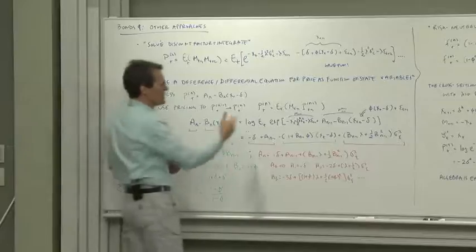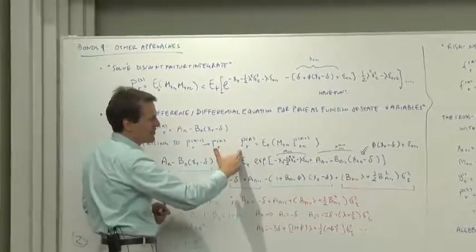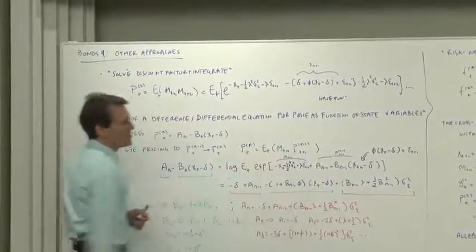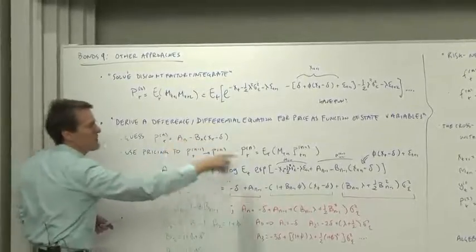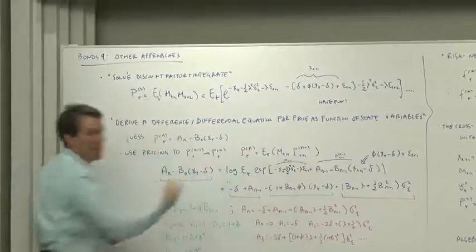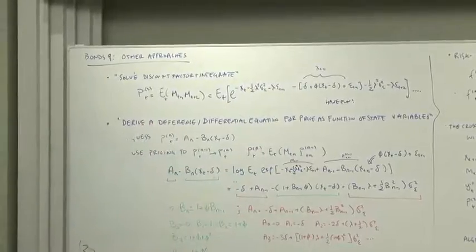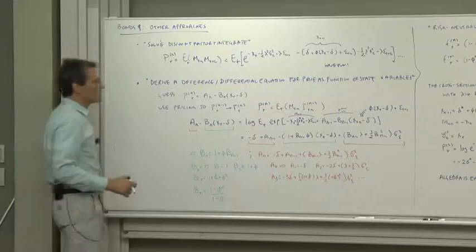What does pricing logic mean? Pricing logic says that the price of the n period bond is the expected discounted price of the n minus 1 period bond. So if you knew the an minus 1 and bn minus 1, then you could work back and find the an and the bn. That's the idea. Okay, let's do it.